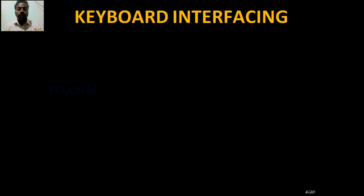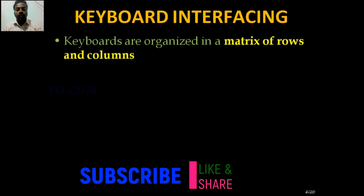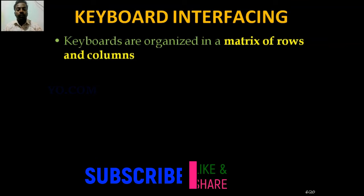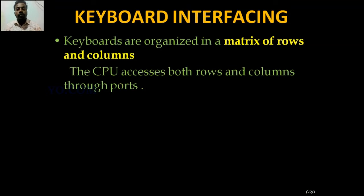In 8051 microcontroller, keyboards are organized in a matrix of rows and columns. How we identify which key is pressed or released is determined by matrix operations. The matrix has two dimensions — rows and columns — and the CPU accesses both through the port. The microcontroller has four ports, and any two of those ports are used for the keyboard connection.